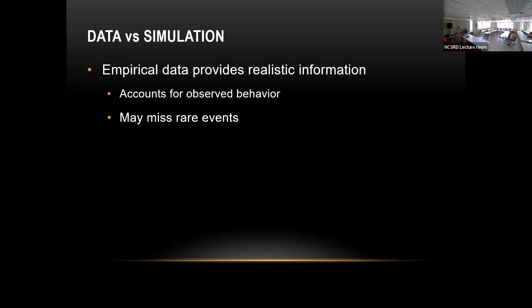Here are some pros and cons of data versus simulation. Data provides real information — there's a saying all models are wrong but some are useful. With data you observe what really happened, but you may actually miss rare events, like I just argued. Simulation can give very fine-grained detail — you can model people moving to a millimeter — and can account for underlying mechanisms.